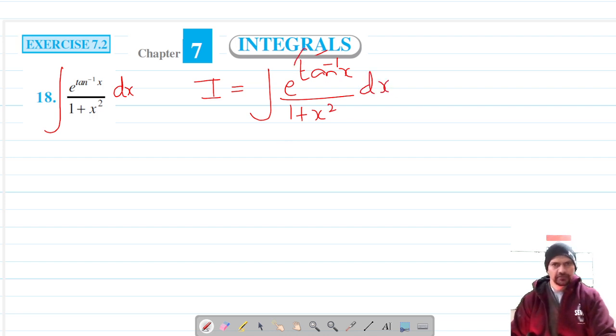And we know that if we substitute tan inverse x as t, its differentiation is 1 upon 1 plus x squared.